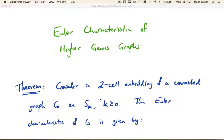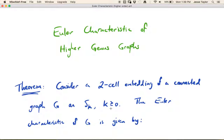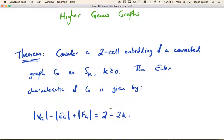Hopefully you've read in the textbook about what a two-cell embedding is, but a two-cell embedding is basically an embedding where every face can be contracted to a single point. The theorem states: if you have a two-cell embedding of a connected graph on some surface S_k, where k=0 is the plane, k=1 is the torus, k=2 is the double torus, then the Euler characteristic is given by vertices minus edges plus faces, equal to 2 minus 2k.